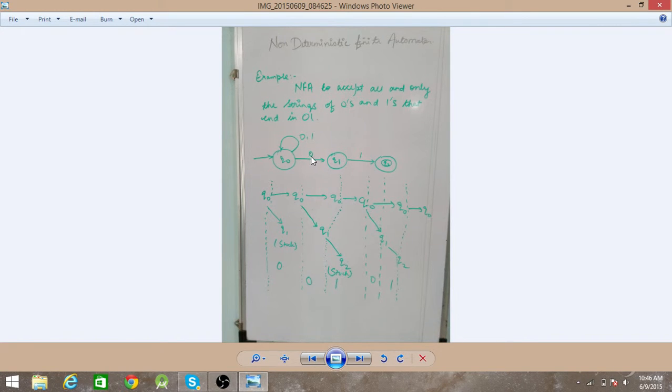It goes to Q1 on 0 input and also it is present on Q0. So it goes to two states, which is Q0 and Q1 on 0 input. Next, Q0 goes to same state on 1 input. Q1 goes to Q2 on 1 input and it goes nowhere on 0 input.